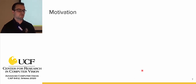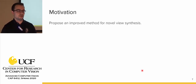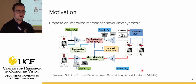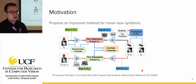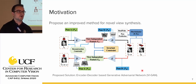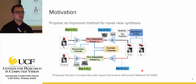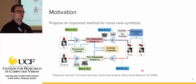This leads to the main motivation of the paper: to propose an improved method for novel view synthesis. The authors developed an encoder-decoder-based generative adversarial network called VIGAN. The key idea is that any 2D image is a projection of the 3D world. Therefore, if you can find features that are viewpoint invariant, these are important intrinsic properties of the 3D world. The model attempts to learn these 3D properties and then utilize them to generate a new target view.